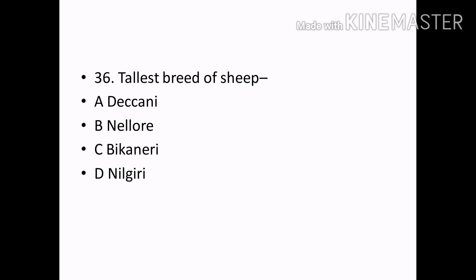Tallest breed of sheep is: Options — Deccani, Nellore, Bikaneri, Neelagiri. Correct answer: Option B — Nellore.